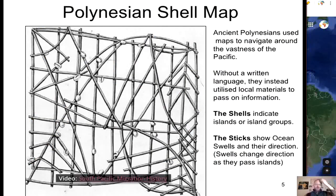Early European explorers looked down on Polynesians and dismissed suggestions of advanced technologies. However, scholars have recently discovered ancient Polynesian shell maps of ocean swells and islands across the region, suggesting these people were far more advanced than previously thought. Without a written language, they utilized local materials to pass on information — shells on these maps indicate islands or island groups, and sticks show ocean swells and their direction, which change as they pass islands. Let's watch a short clip from National Geographic titled South Pacific Migration History.